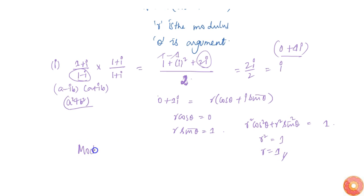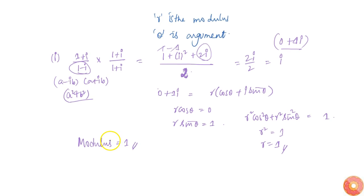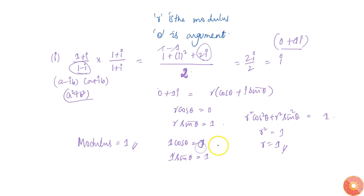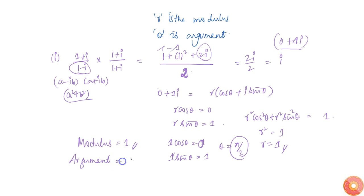Therefore the modulus is equal to 1. For the argument, 1 into cos theta equals 0 and 1 into sin theta equals 1. This occurs at theta equal to pi by 2. Therefore the argument is equal to pi by 2.